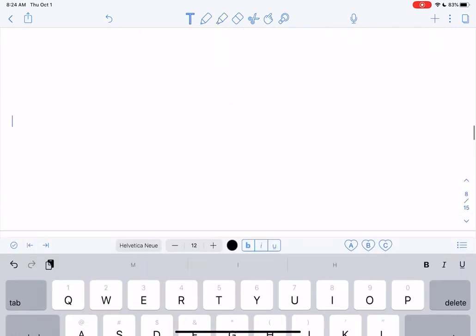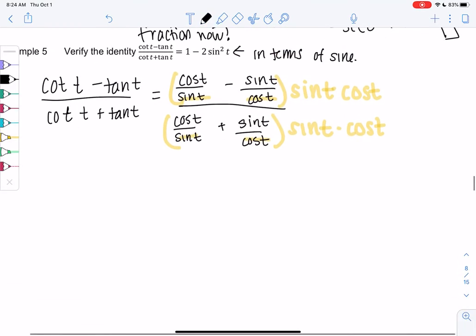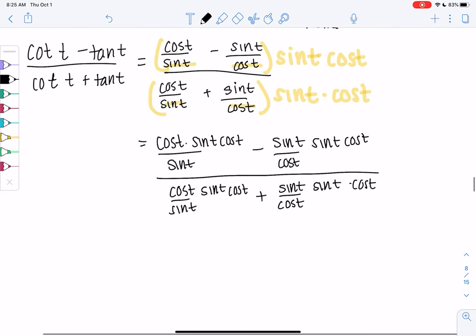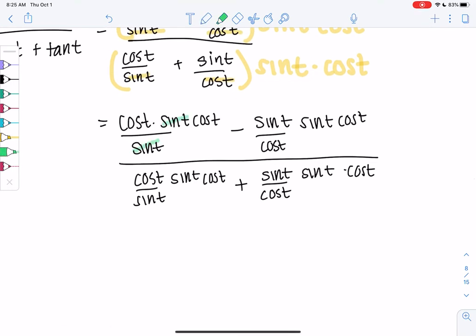These are messy - I think they call them complex fractions. We get cosine times cosine all over sine minus sine over cosine, and then distribute LCD. Things should simplify nicely if you do this correctly. All the denominators should cancel. On top we get cosine squared minus sine squared, all over cosine squared plus sine squared.